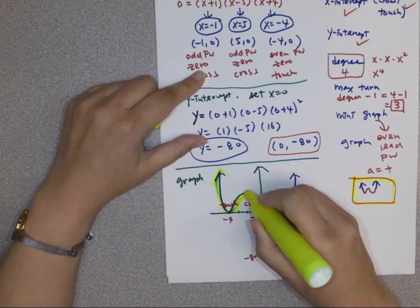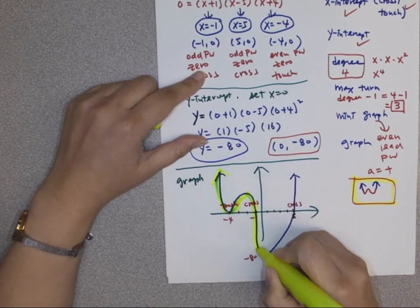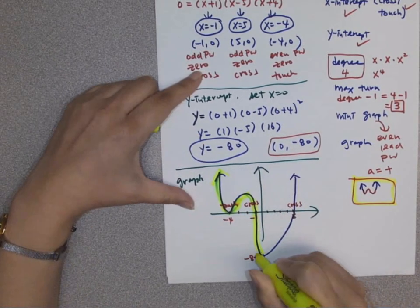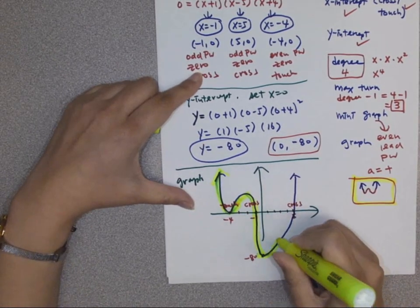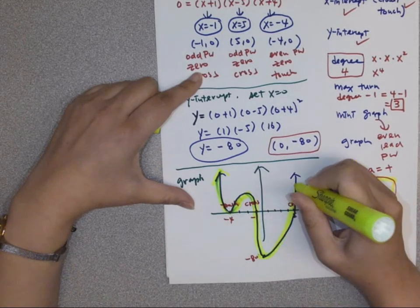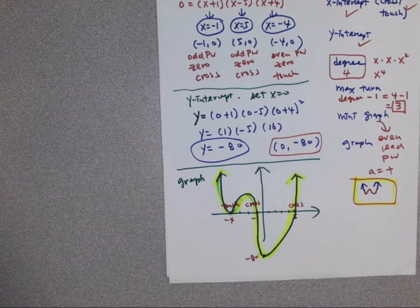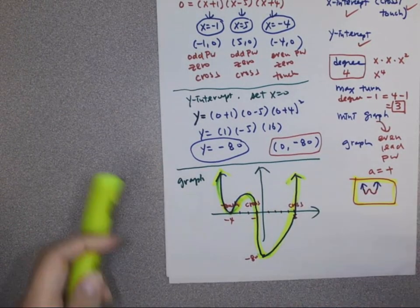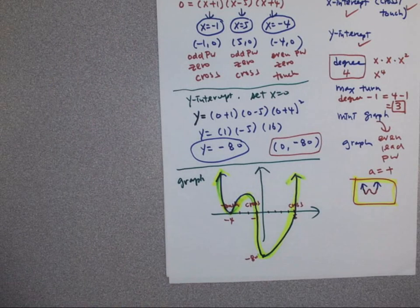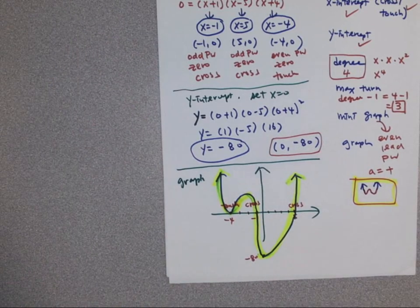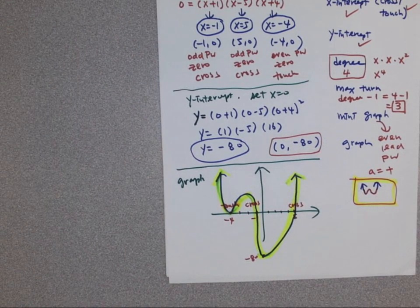For section 3.2, you need to know about end behavior, how to find a leading term, how to find maximum turning points, and when it's crossing versus touching. Hopefully that helps.